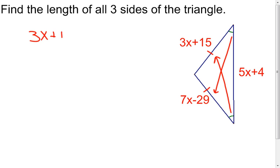Which tells me that the 3X plus 15, that side, and the 7X minus 29 side, those sides will be equal in length. I can solve my equation. Get rid of the 3X from both sides. I'm going to get rid of the minus 29 from both sides.